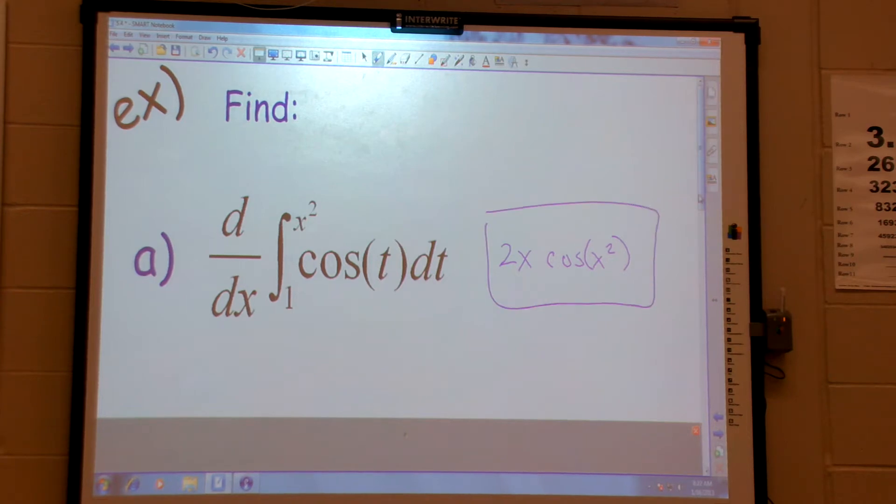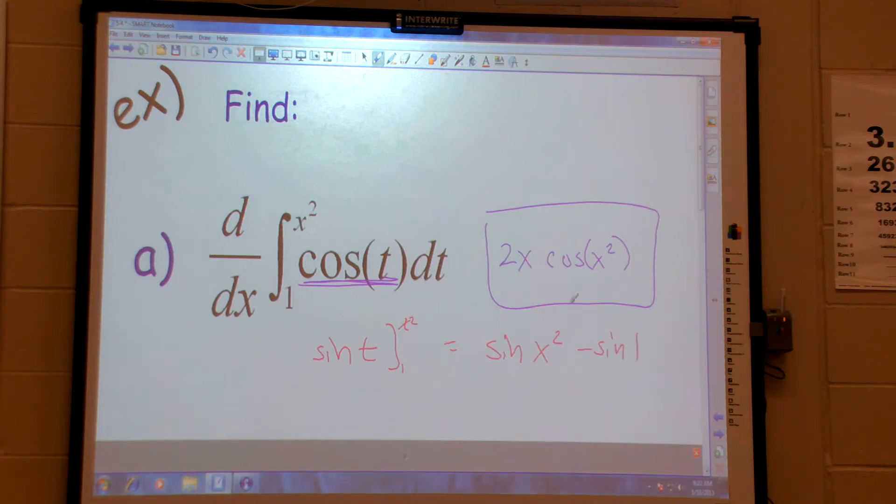And let's work through this so you see why this works. What is my anti-derivative here? Positive sine. Sine t evaluated from 1 to x squared, correct? Yes. Which is sine of x squared minus sine of 1? Yes.